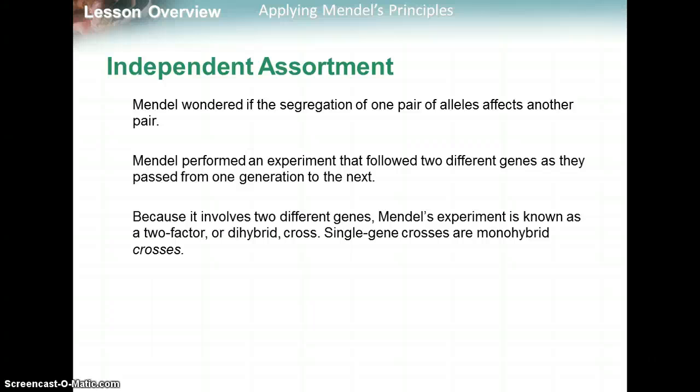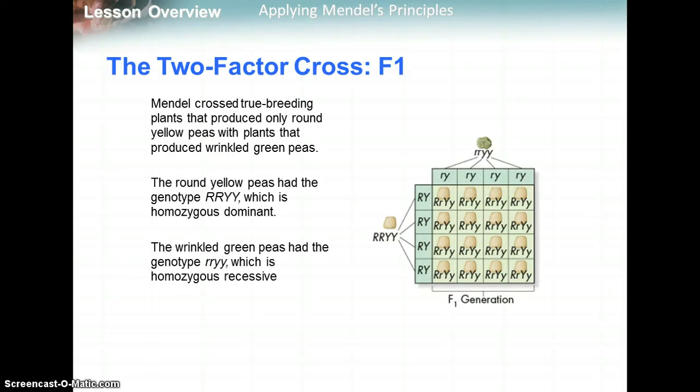Mendel wondered if the segregation of one pair of alleles affected another. He performed an experiment that followed two different genes as they passed from one generation to the next. Because it involves two different genes, Mendel's experiment is known as a two-factor or dihybrid — di meaning two — cross. A single cross would be a monohybrid, where mono means one.